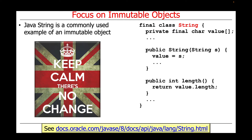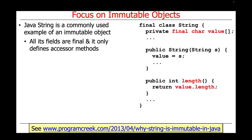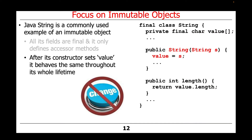Java String is a commonly used example of an immutable object that you've likely run across when writing Java programs. All of the fields in the String class are defined as final, such as the value field shown here, and it only defines accessor methods, such as the length method. After the constructor of String sets the value, the String will behave the same throughout its entire lifetime.